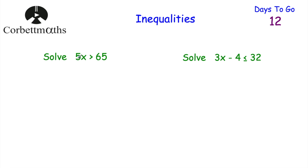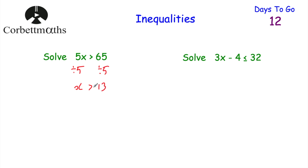For the first one, we've got 5x is greater than 65. We don't want this multiplied by 5, so let's divide both sides by 5. 5x divided by 5 leaves us with x, then we keep our greater than symbol, and 65 divided by 5 is 13. So x is greater than 13.